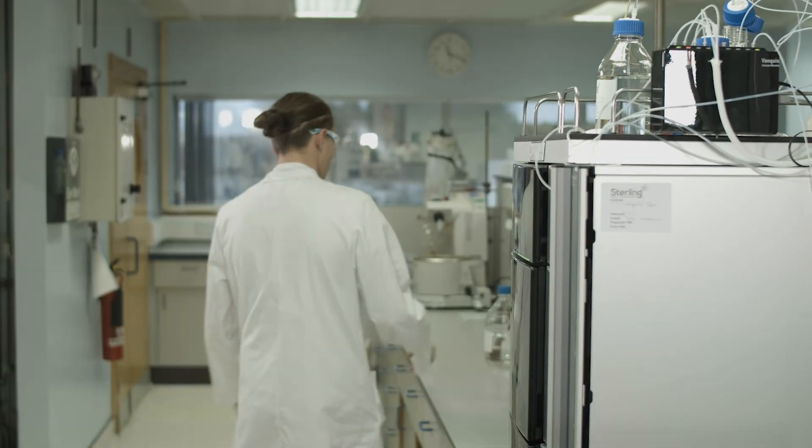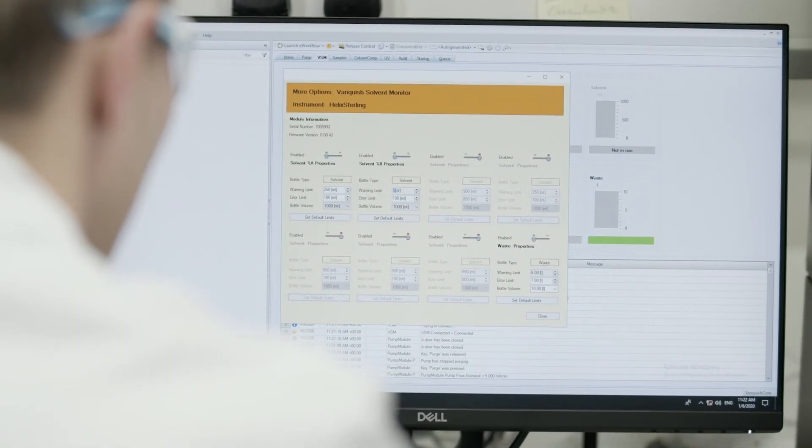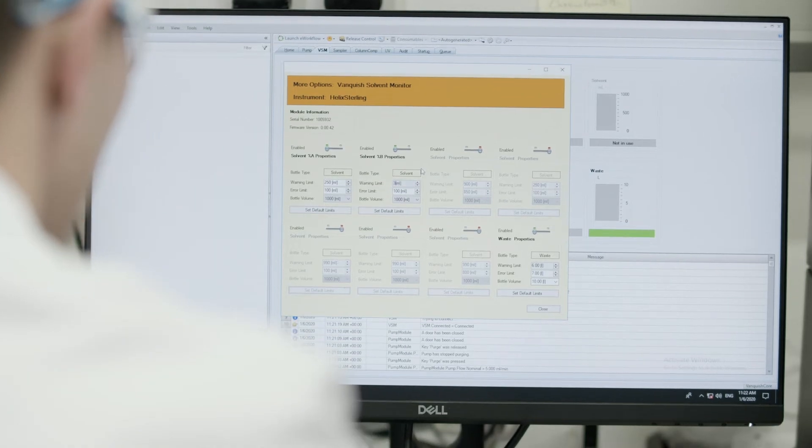The Solvent Monitor is a very useful tool. For example, if you don't have enough mobile phase to last your run, the Solvent Monitor will tell you and won't let you perform that run until you top up the mobile phase to an appropriate level.